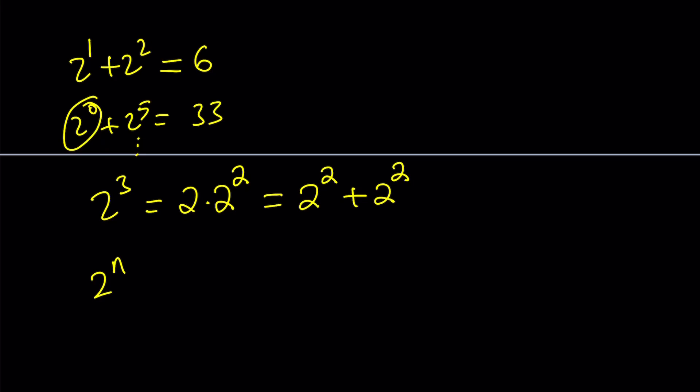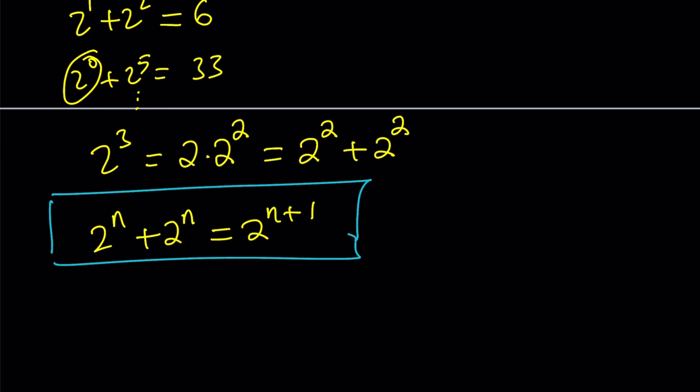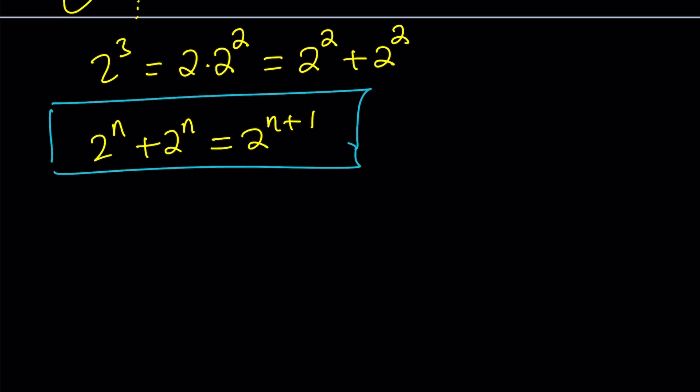In other words, 2 to the n plus 2 to the n equals 2 to the power n plus 1 is the only way to break down a power of 2. So, that's what we need to have because we are solving for integers. So, let's see how we can apply it to our problem.